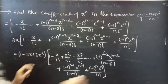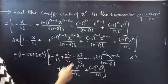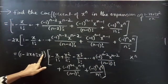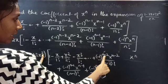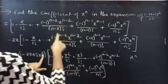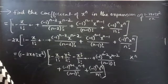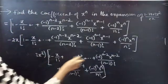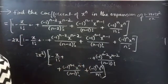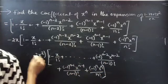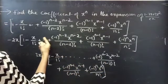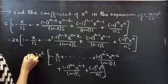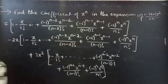Here we have x square, so in order to find the term containing x power n we will consider the n minus 2 term. If you have x cube you would take the n minus 3 term, that is minus 1 power n minus 3 into x power n minus 3 by n minus 3 factorial.